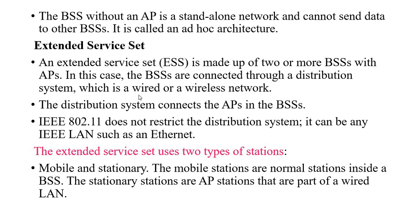The Extended Service Set is made up of two or more Basic Service Sets with access points. Every network will be having an access point, and through the access point only each host can connect to other nodes in the network. IEEE 802.11 does not restrict the distributed system; it can be any IEEE LAN such as an Ethernet. The Extended Service Set uses two types of stations: mobile stations inside a Basic Service Set, and stationary stations which are access point stations that are part of the wired LAN.